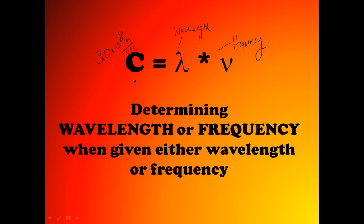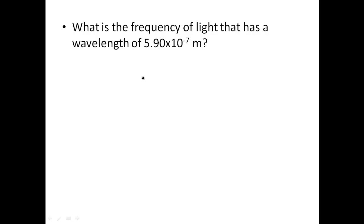It doesn't matter where it is on the EM spectrum. Whether we're talking about radio waves, light waves, infrared, ultraviolet, visible light, x-rays, or gamma — it all travels at the same speed. But wavelength and frequency are inversely proportional, so if one goes up, the other goes down. Together, they're always going to equal the speed of light. If you multiply them, you get 3.0 times 10 to the 8th meters per second.